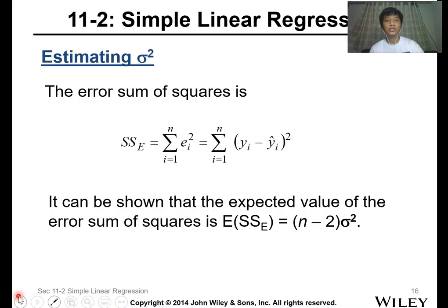Now let's discuss estimating the variance of your regression model. The error sum of squares, SSE, is equal to the summation of the squared residuals, and the residual is just equal to your actual y value minus your predicted.